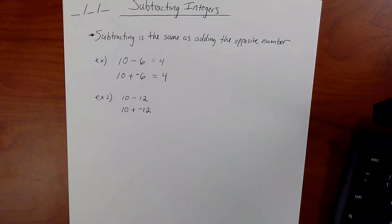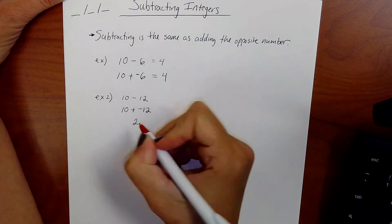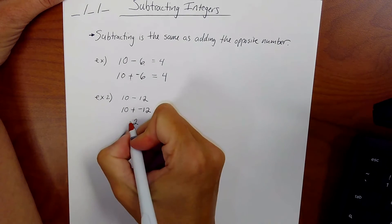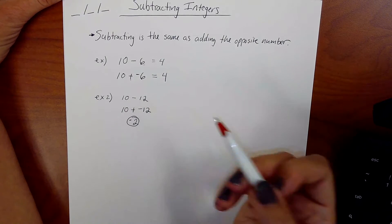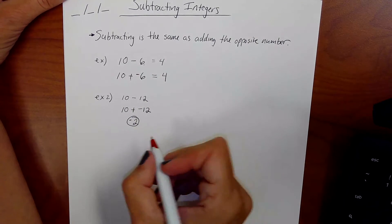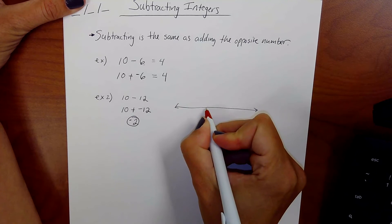The signs are different. So I subtract. I get a 2. Is that going to be positive or negative? In this case, it's actually going to be negative. So 10 take away 12 is negative 2. If you looked on a number line, if I could do that here.